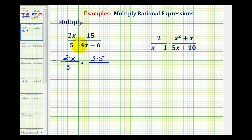And then to factor 4x minus 6, remember the first step in factoring is to factor out the greatest common factor. And since 4 and 6 share a common factor of 2, we can factor out a 2, we'd be left with a quantity of 2x minus 3.